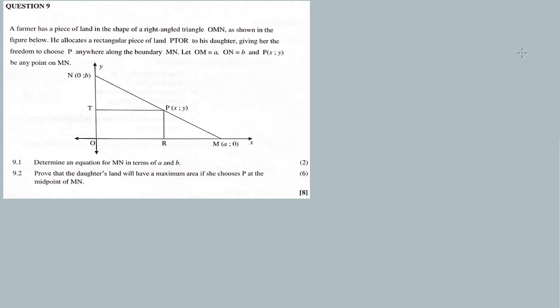As the question states: a farmer has a piece of land in the shape of a right angle triangle O-M-N, as shown in the figure below. He allocates a rectangular piece of land P-T-O-R to his daughter, giving her freedom to choose P anywhere along the boundary of M-N. So the farmer is giving her a piece of land.